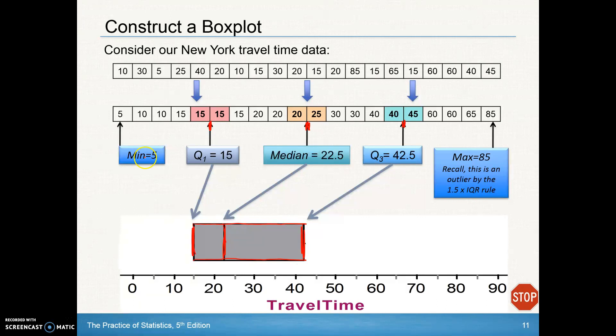Look at the minimum at 5 and draw a whisker to that. The maximum is 85, but this 85 was an outlier. Draw a line out to the next value; the 85 is an outlier but the 65 is not. Draw a line out to 65, stop it there, and make an asterisk at 85. This is what's shown on the slide.